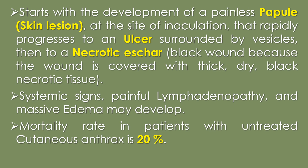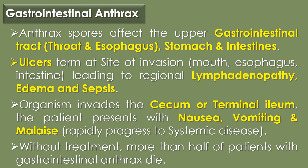Systemic signs, painful lymphadenopathy, and massive edema may develop. The mortality rate in patients with untreated cutaneous anthrax is 20%. The second clinical disease caused by Bacillus anthracis is gastrointestinal anthrax. When a person eats raw or undercooked meat from an animal infected with anthrax, they can develop gastrointestinal anthrax.